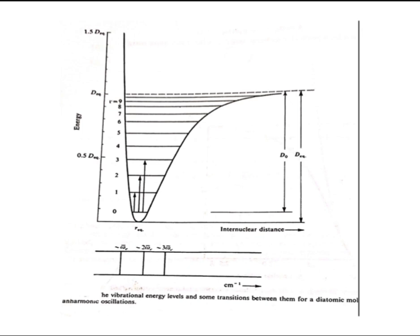Three transitions are shown: the first is from v=0 to v=1, where v is the vibrational quantum number (v = 0, 1, 2, 3, ... and so on). The anharmonic oscillator obeys the selection rule Δv = ±1, ±2, and ±3. The transitions shown are from v=0 to v=1, v=0 to v=2, and v=0 to v=3 — all originating from the ground state, with Δv = +1, +2, and +3 respectively.